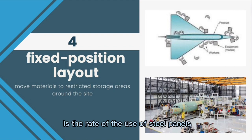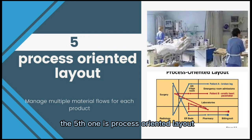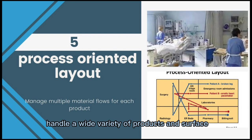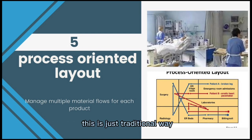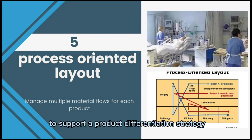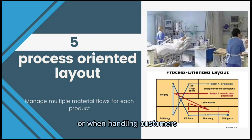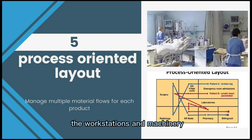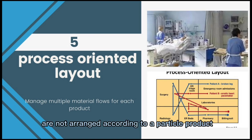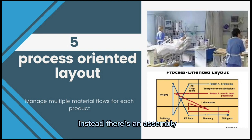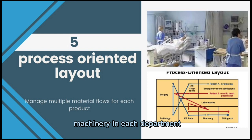The fifth one is process oriented layout. A process oriented layout can seamlessly handle a wide variety of products and services. It is the traditional way to support a product differentiation strategy, and is most efficient when making products with different requirements or when handling customers, patients, or clients with different needs. In a process layout, workstations and machinery are not arranged according to a particular production sequence; instead, similar operations or machinery are assembled in each department, such as a drill department and a paint department.